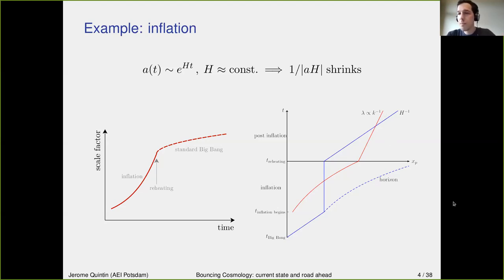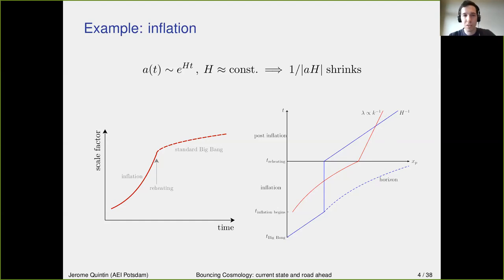Question: Why have you written the absolute value of H? Because, as we'll see shortly, the Hubble parameter could be negative — this will come in a couple of slides.